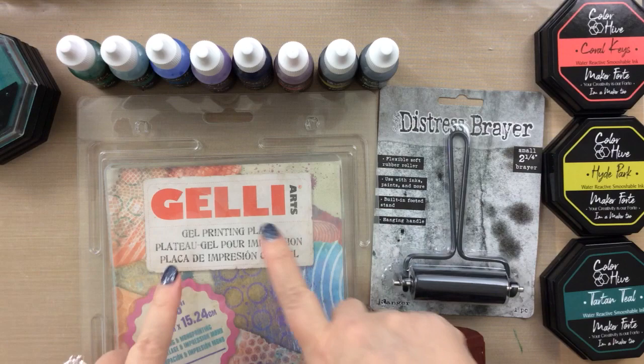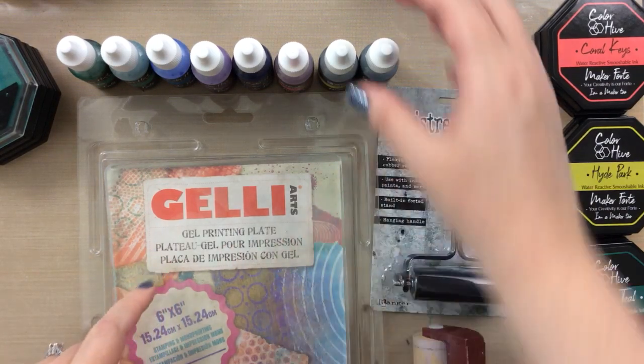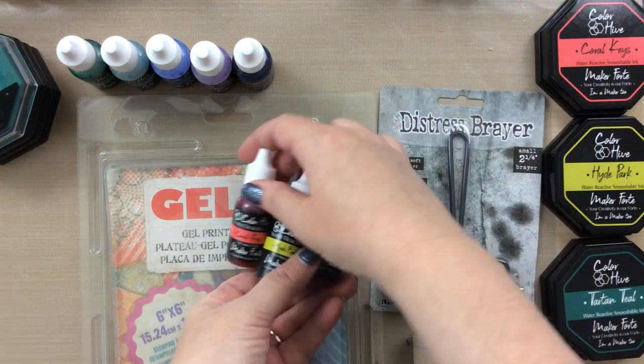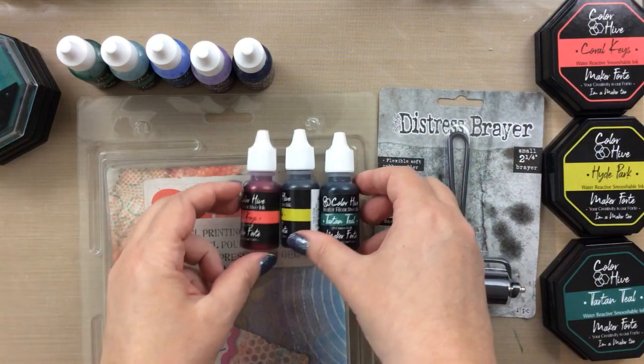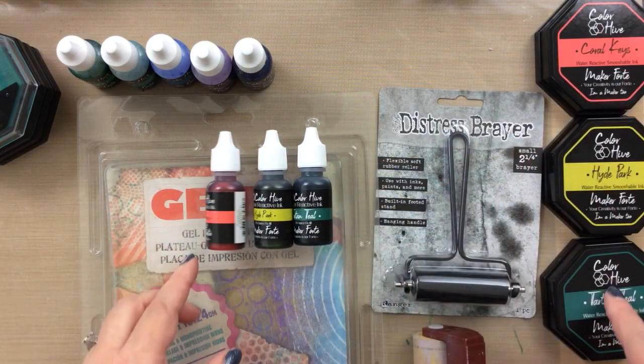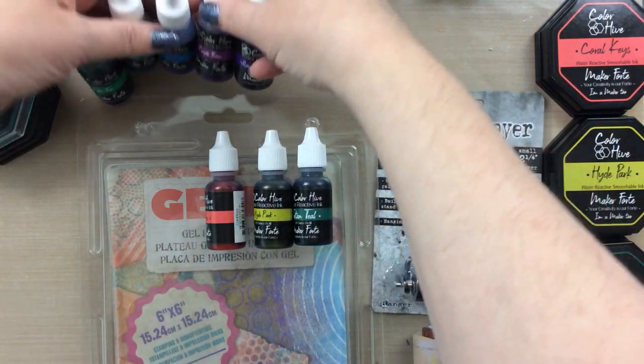I have this gel press here. This is just a 6x6 inch gel press. I also have some re-inkers in my favorite colors. These are some of the brand new inks from Maker Forte. I have Coral Keys, Hyde Park, and Tartan Teal.